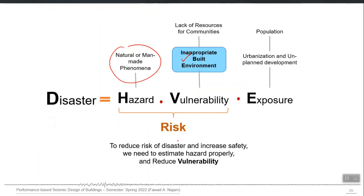There are countries which have very high hazard, like Japan, but also very low vulnerability because their building stock is very good quality. This results in low risk despite very high hazard. But in our case, we have very high hazard and at the same time very high vulnerability, which results in very, very high seismic risk.